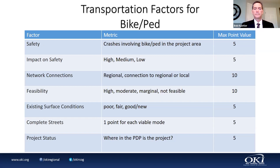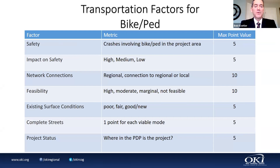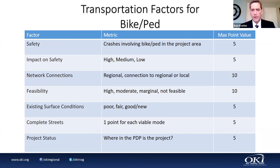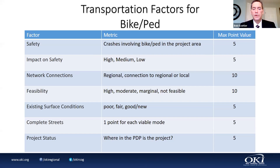Finishing the bike/ped factors: existing surface conditions — similar to roadway, but you typically won't have IRI or PCR. If it's brand new or in great condition, no points; if it's dilapidated, you'd score points. Complete streets is the same as before — one point for each viable mode up to five. Project status is the same as all other projects: where is it in the project development process?